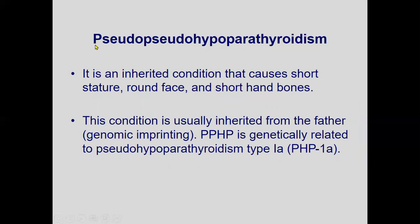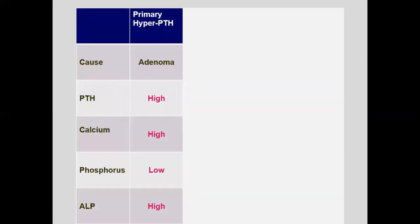Another term is pseudo-pseudo-hypoparathyroidism (PPHP), an inherited condition that causes short stature, round face, and short hand bones. It is usually inherited from the father — this is called genomic imprinting. PPHP is genetically related to pseudo-hypoparathyroidism type 1 and is inherited in an autosomal dominant manner due to mutation in the GNAS gene.